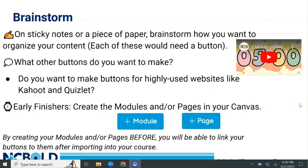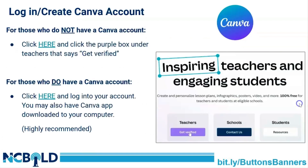After you've finished brainstorming your buttons, the next step is to create a Canva account. Go to the link in the slides or search for Canva educator accounts. Once you get to the website, click the purple box that says Get Verified. Make sure you are using your school email. If you already have a Canva account, log into that account and we'll start making the buttons.